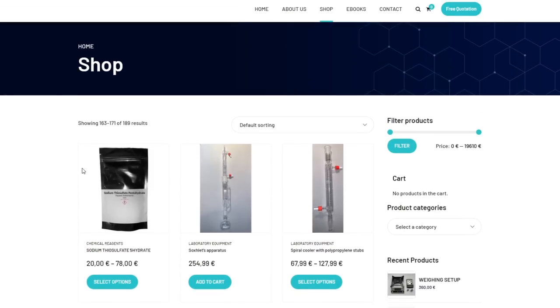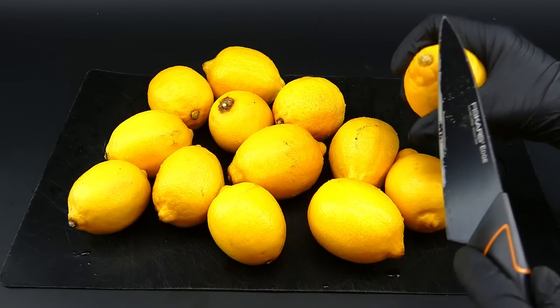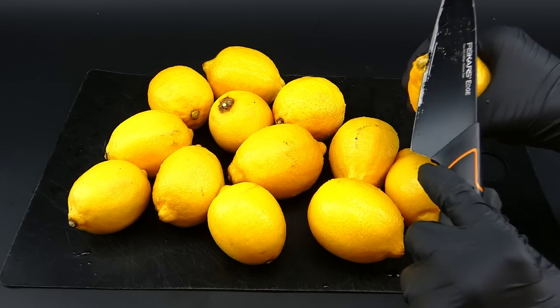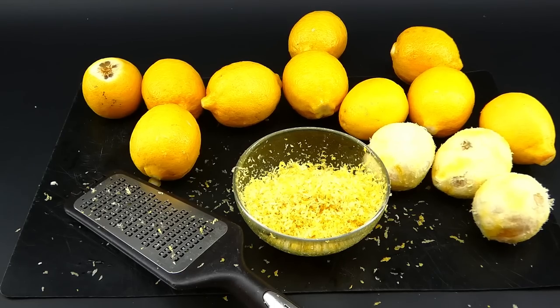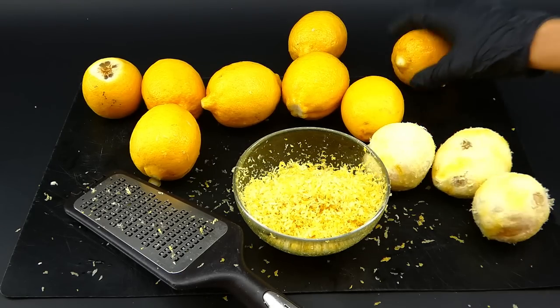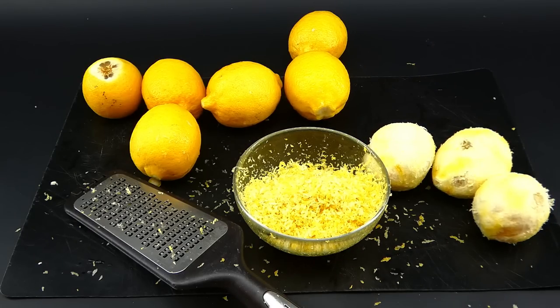To start extracting the essential oil from lemons, I firstly have to collect all of their outer yellow peel, which would leave me with a lot of naked lemons that I have no idea what to do with. Maybe I will make some lemonade or something, but I'm getting slightly off track here.